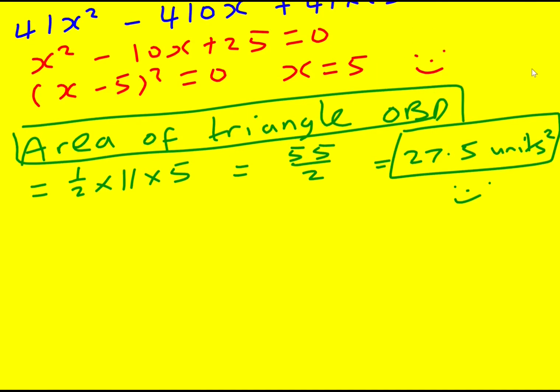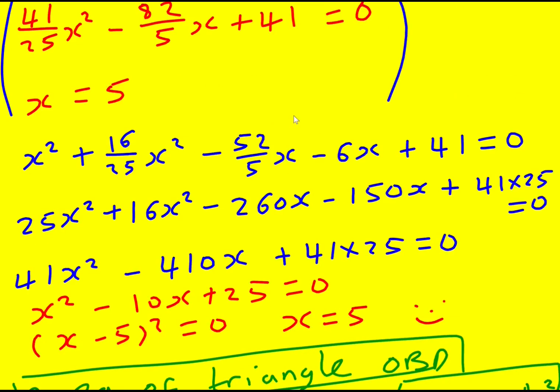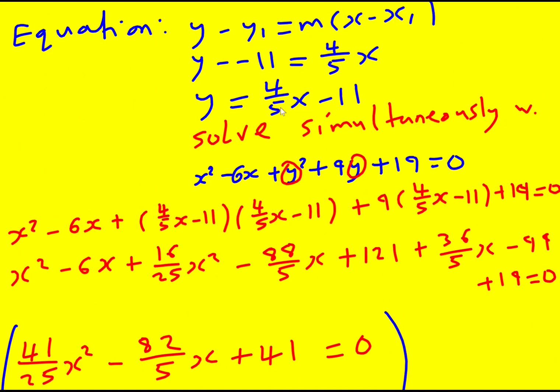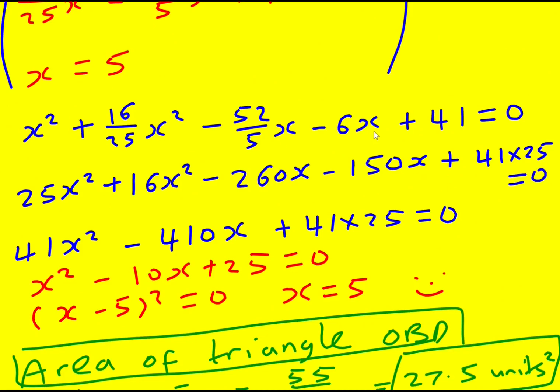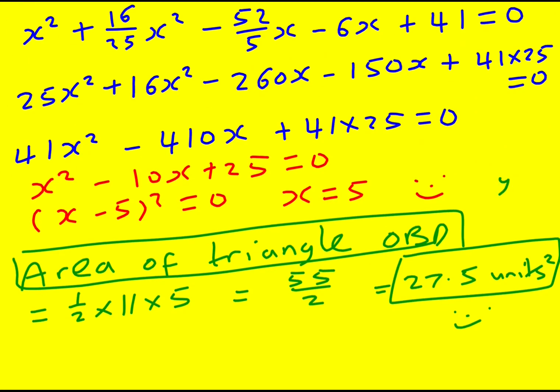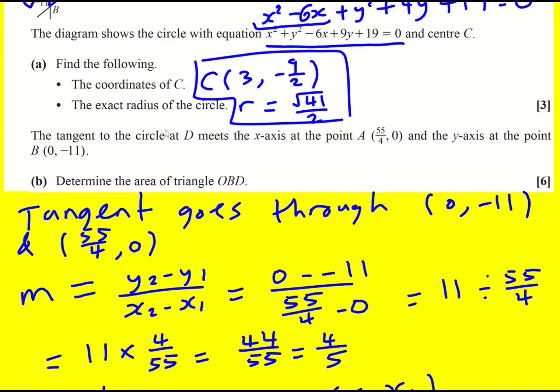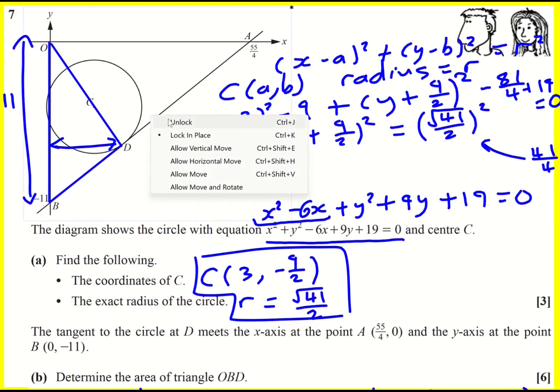You might have been tempted to work out y, in which case you can. It doesn't actually help, but substitute it back into here and it's going to be 4 fifths times 5, which is just 4. 4 minus 11 is minus 7. Okay, I'm going to show you an alternative method for this.